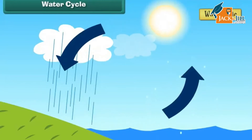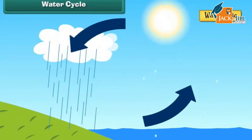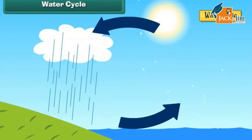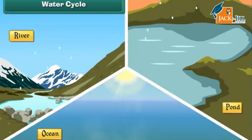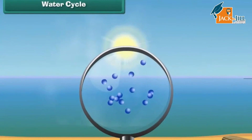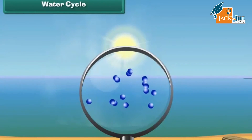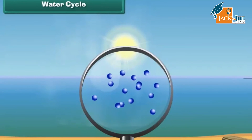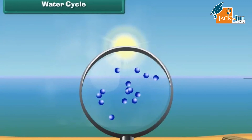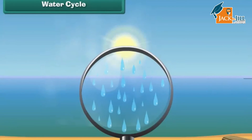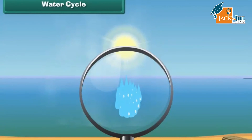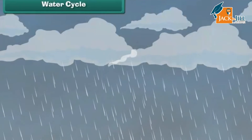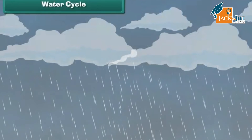The water cycle is the movement of water from Earth to sky and then back to the Earth. Water in ponds, rivers, and oceans gets heated by sun rays in the daytime. The heated water turns into water vapor and rises up. As it goes higher, the water vapor cools down and changes into water droplets. These droplets come together to form clouds, and then fall on Earth as rain.